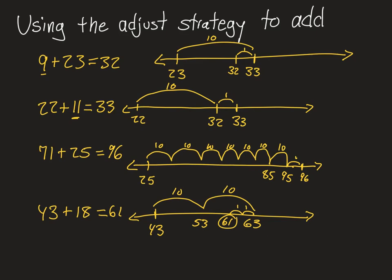So on this one, 9 plus 23, I start at 23. I jumped 10. That took me to 33. Then I subtract 1 and that got me to 32. Or in this one, I started at 22. I added 10. Then I added one more. That got me to 33. So the arrow way is just another model that you can show.